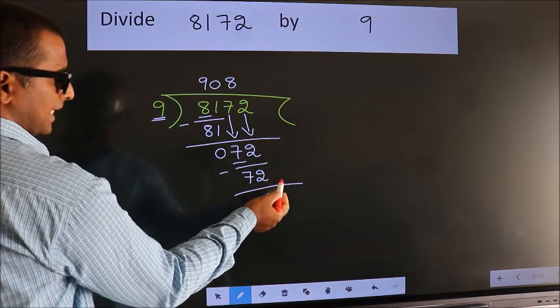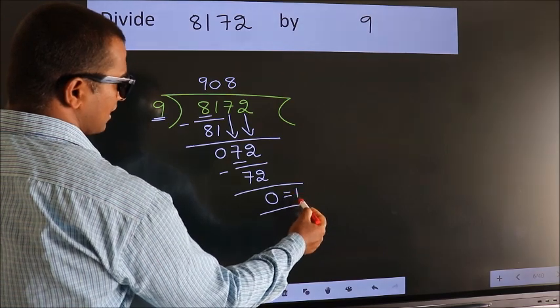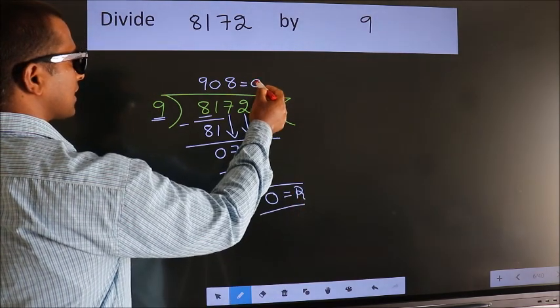No more numbers to bring down. So we stop here. This is our remainder. This is our quotient.